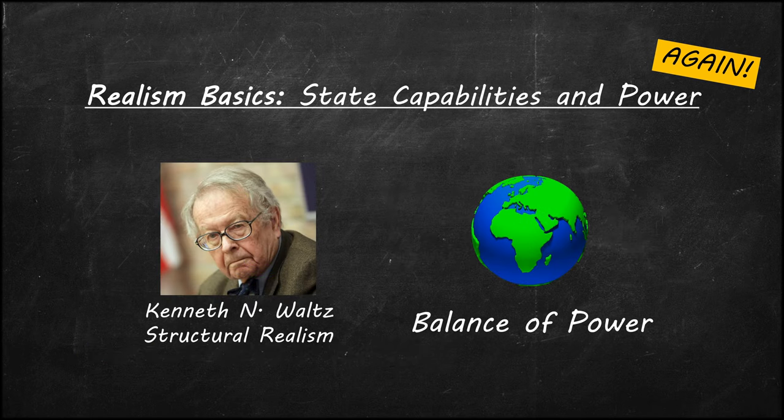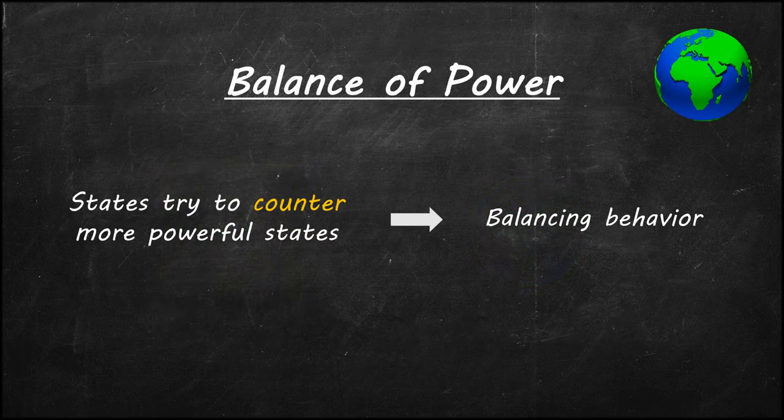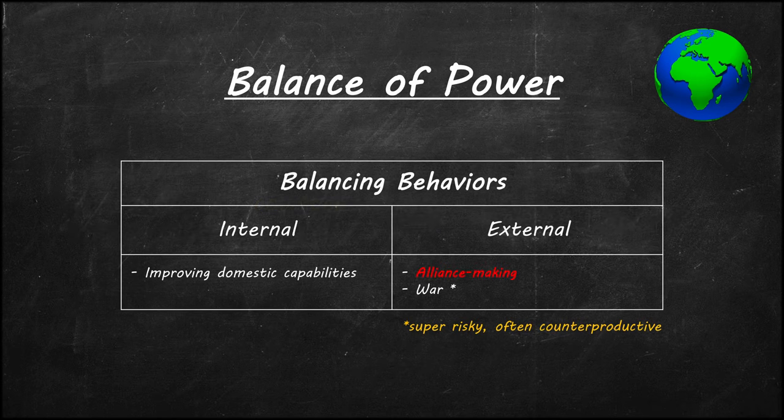In structural realism, which was formulated by Kenneth Waltz, states form alliances based on the balance of power. The balance of power theory claims that states behave in ways that counter the threats posed from stronger states. Whenever states behave in a way to balance against another state's power, it's called balancing behavior. There are two types of balancing behaviors: internal and external. Internal balancing is when a state develops its own capabilities through investing in domestic systems. This can include economic reforms, military investment, improving social stability, and so on.